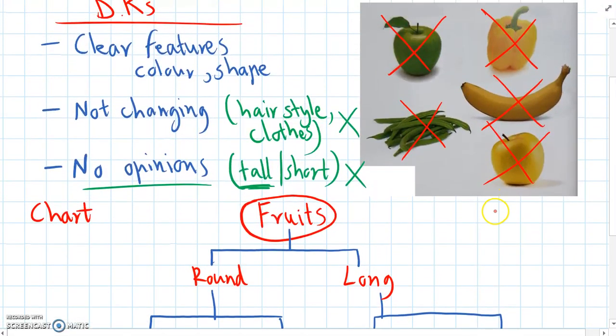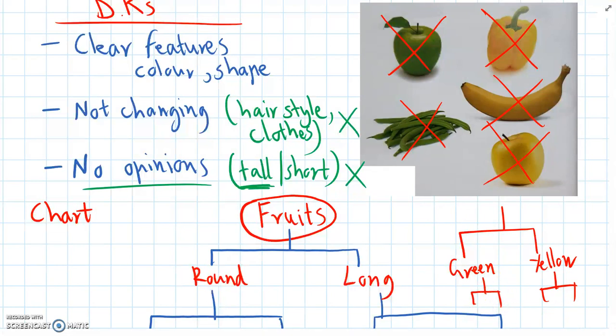With these fruits, we might have chosen to do color as the first question, green and yellow, and then ask questions after that. But it's up to you when you're making your key to decide on those questions. So there are many ways to make a key. Many possible keys.